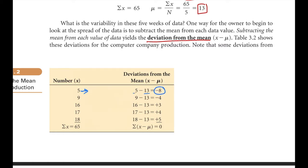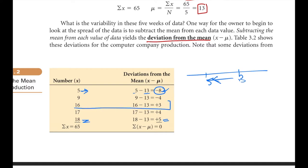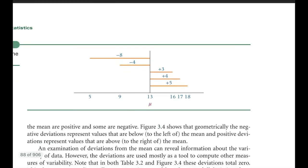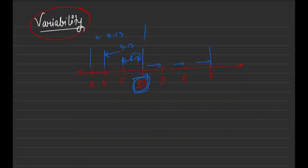For example, 5 deviated as 5 minus 13, which is minus 8 — meaning it's below the mean by 8 units. And 18 has a 5-unit gap but went beyond the mean. The closest data point to the mean is 16, which is very close to the central point or average compared to other data points. This is what we calculate using deviation — helping us understand the nature of other data points.